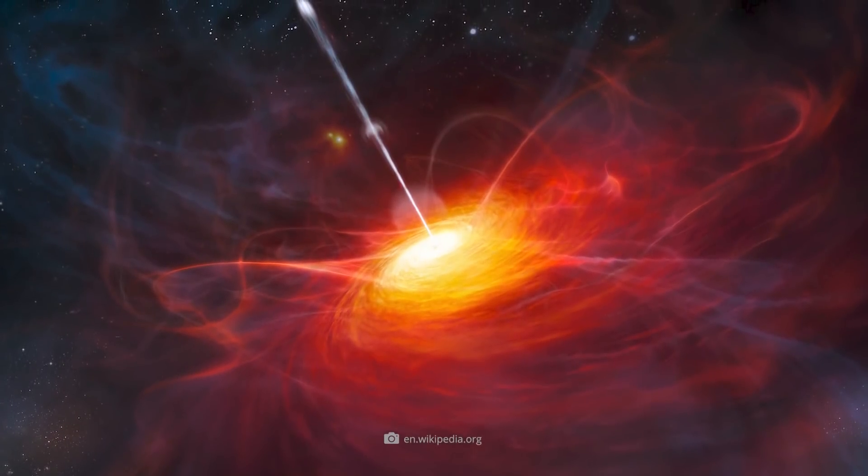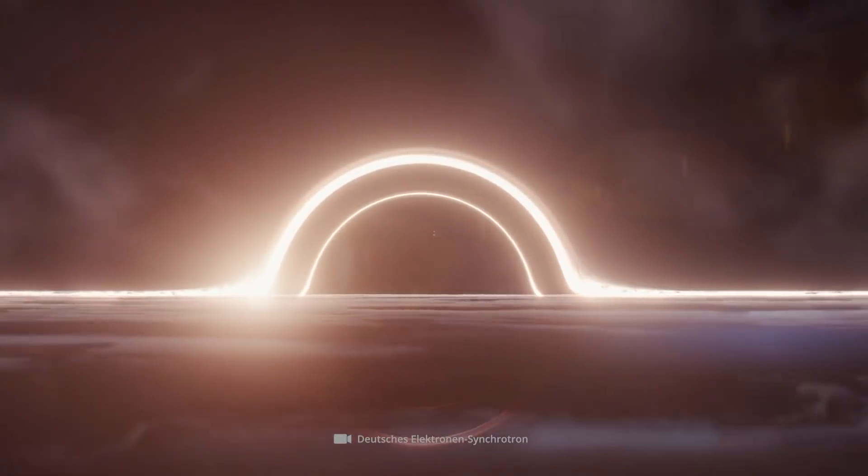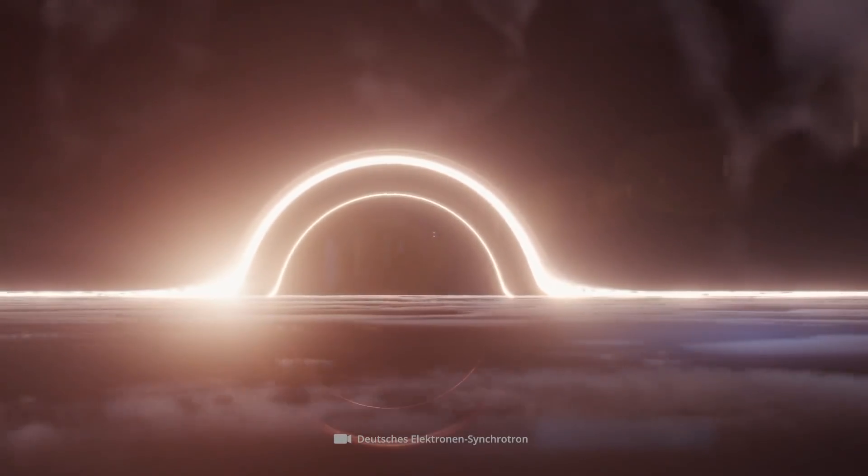The quasar's radiation emission, in turn, comes from the brightly shining accretion disk that surrounds the supermassive black hole at the heart of the galaxy.